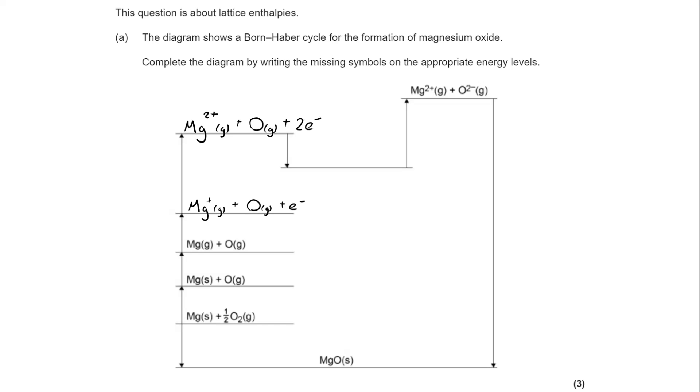Now, the exothermic process that we have here is the first electron affinity. We end up going from O to O-, and I've used one of those two electrons, so I've got to be really careful of the balancing of it. I'm still including state symbols throughout.